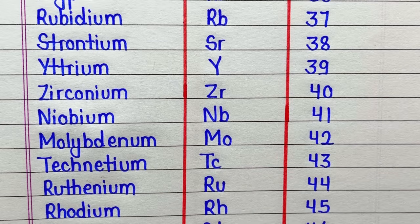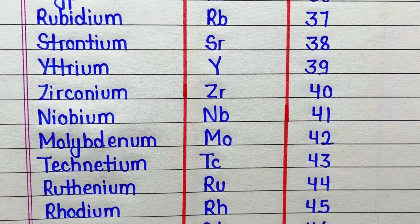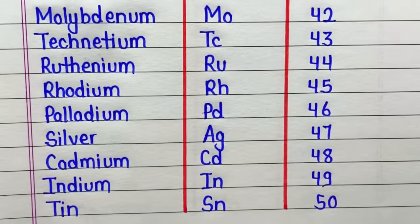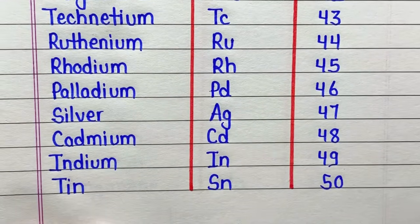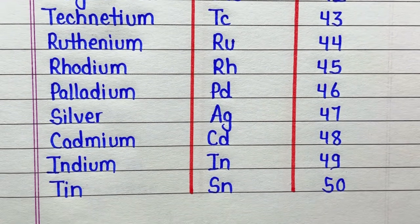Niobium, symbol is Nb, atomic number is 41. Molybdenum, symbol is Mo, atomic number is 42. Technicium, symbol is Tc, atomic number is 43. Ruthenium, symbol is Ru, atomic number is 44.